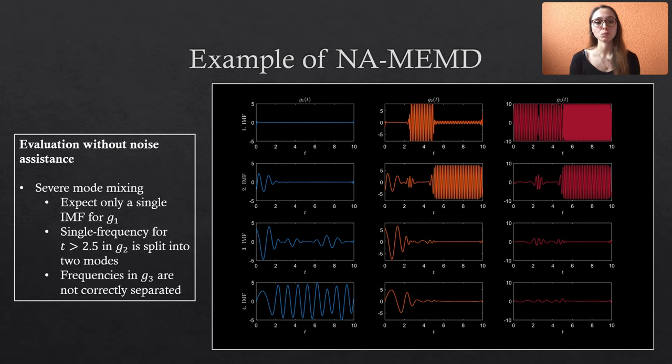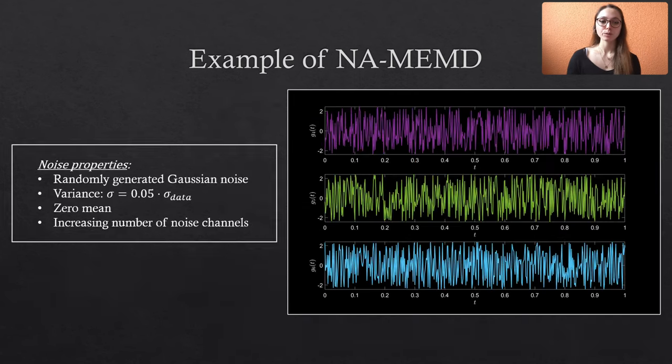But what happens when we append the data with random Gaussian noise prior to the decomposition? Can we reduce these severe mode mixing effects? In total, we define three channels with random Gaussian noise possessing zero mean. We set the variance of the noise to 5% of the variance of the original data, which is from my experience a good choice. But you should definitely play around with this value to get a feeling of its influence on the decomposition of your own data.